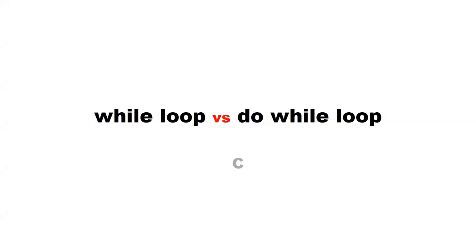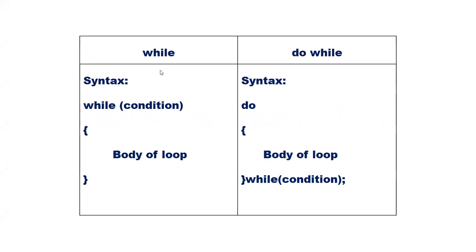In this video, let us explore the difference between while loop and do-while loop. In C programming, while loop and do-while loop execute a block of code repeatedly as long as a specified condition is true.